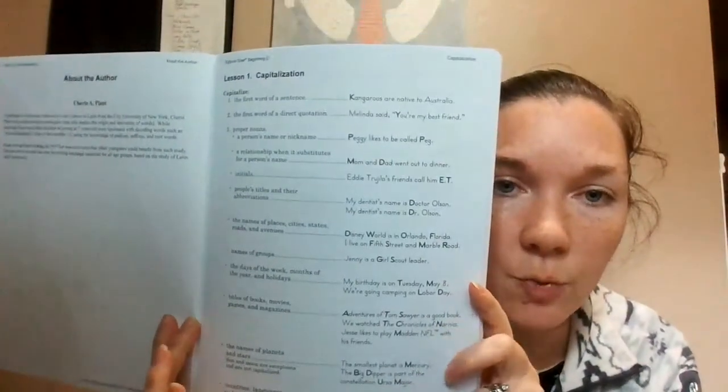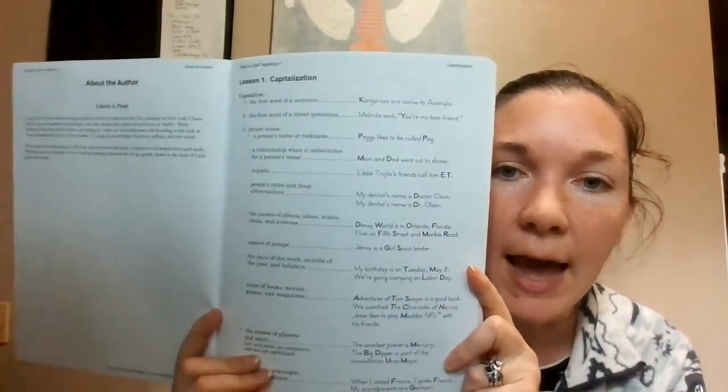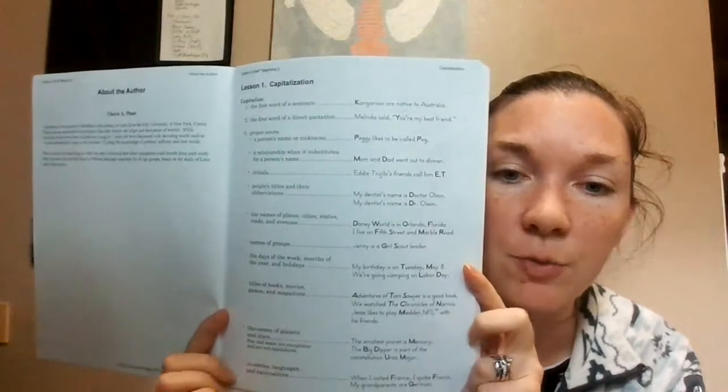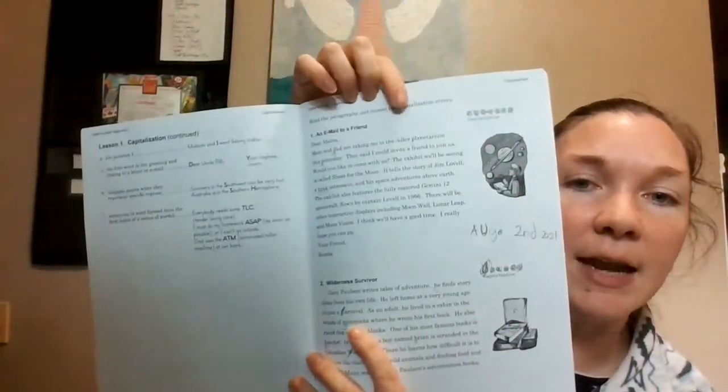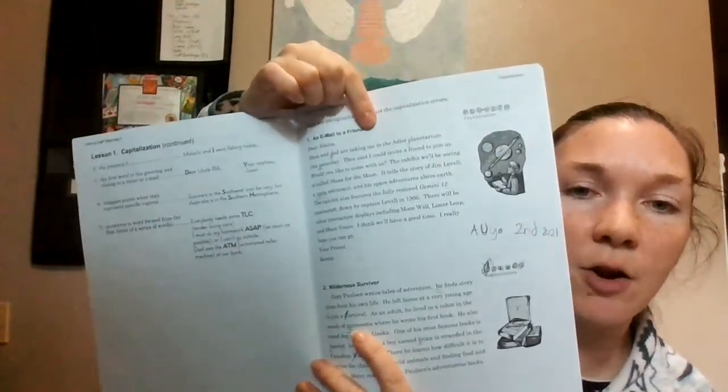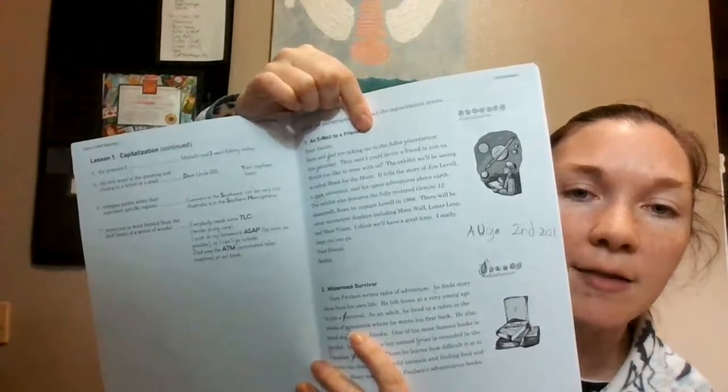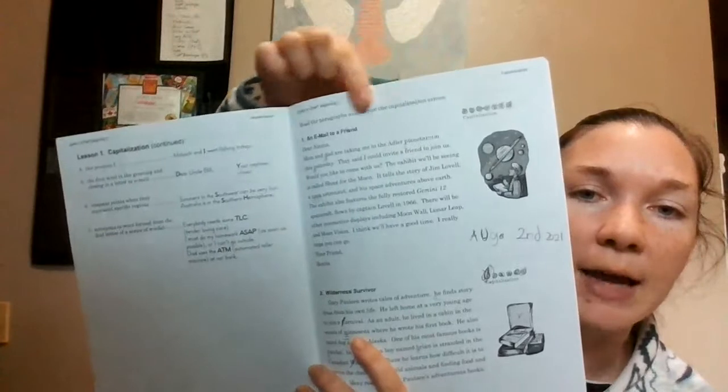So the way that it works is there will be a lesson, and it'll go through what the rules are, what you need to, in this case, capitalize, and it'll give you the rule, and it'll provide you with some examples. These lesson pages usually are about two pages long, so finish up over here, and then it gives you paragraphs to practice. So this is a paragraph that only has capitalization errors, and it tells you how many errors there are to the side.